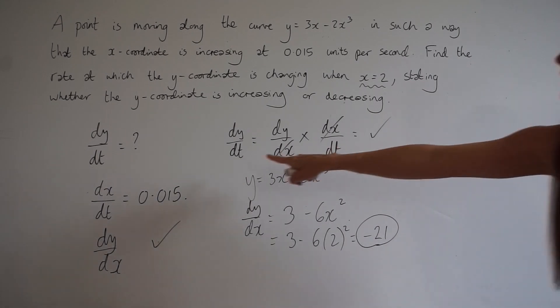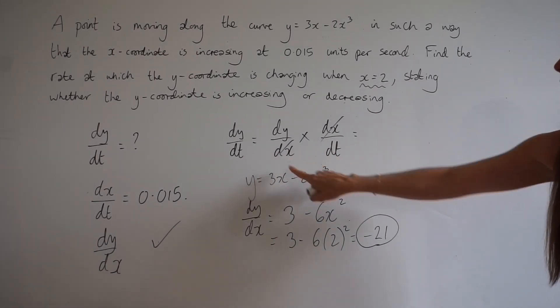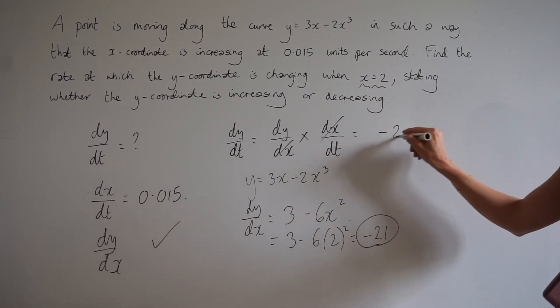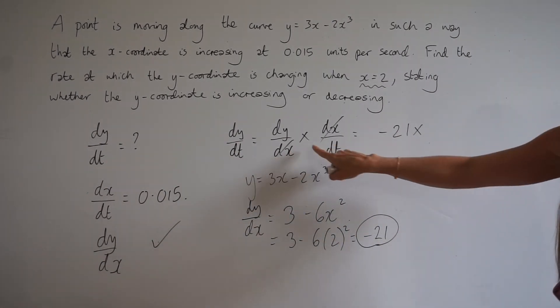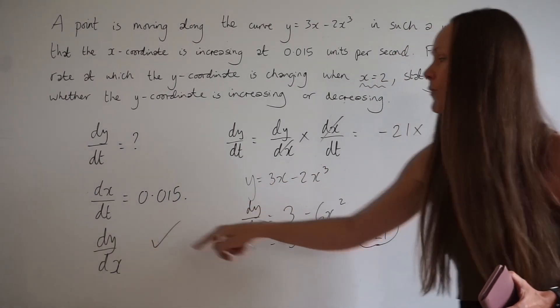Let's go back to what I wrote down earlier. We need to take dy/dx, which is negative 21, and we need to multiply that with dx/dt, which is 0.015.